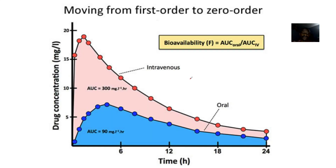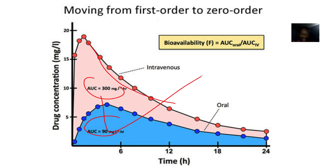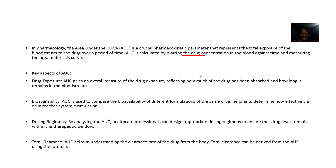So it is calculated by plotting the drug concentration in blood against time. They then measure the area under the curve — this is the curve. So all the area under the curve is the area under the curve. The key aspect to AUC is drug exposure. It gives an overall measurement of drug exposure, reflecting how much of the drug has been absorbed and how long it has remained in the bloodstream.